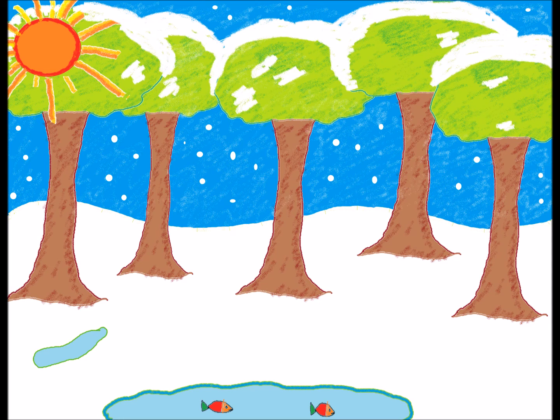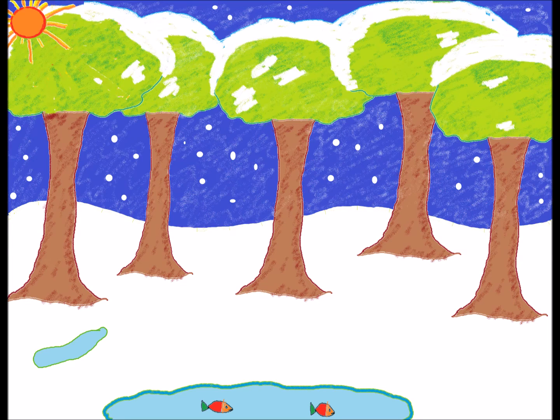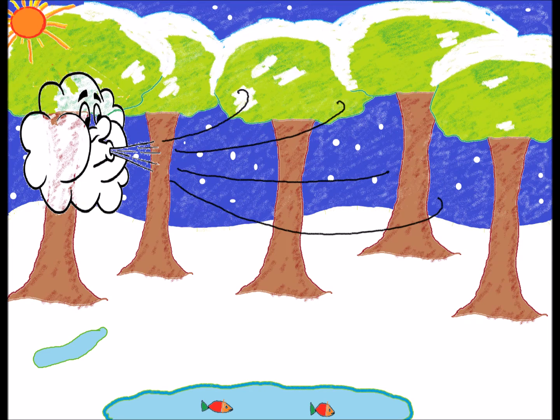As summer ends and winter approaches, days receive less sunlight and air blows colder. Trees prepare for winter and start dropping their leaves.